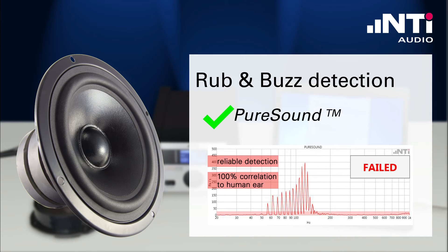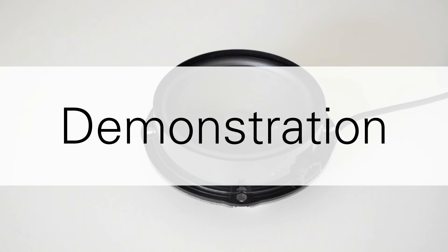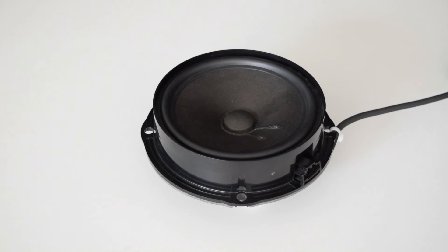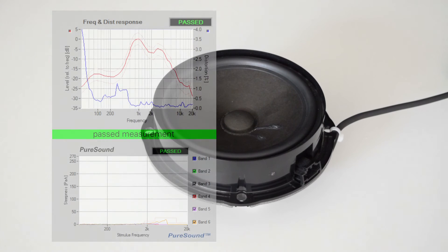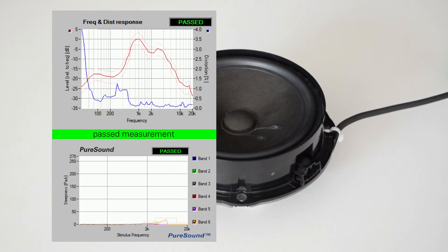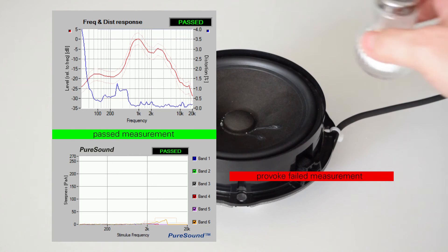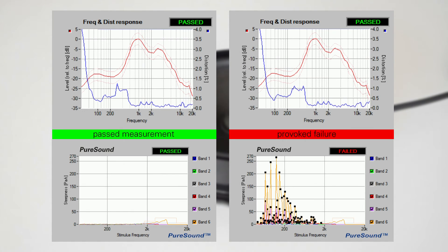The result is a system reporting results that perfectly correlate with those from human listeners. This method has become the quasi-standard in the industry over the last few years. Let's demonstrate how sensitive the system is. As you see, the steepness measurement provides a very distinctive difference, while the distortion measurement is still below the limits.